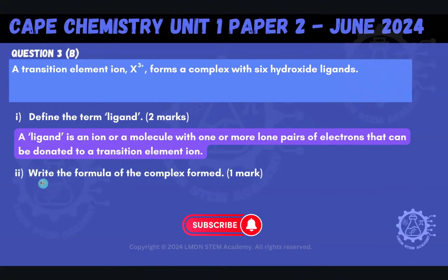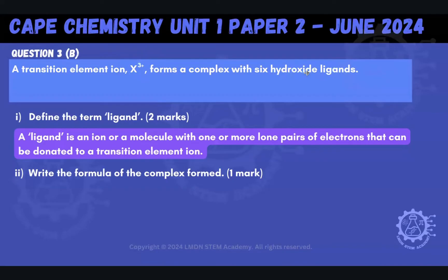Next, we're being asked to write the formula of the complex formed. Here's our transition metal ion. In this particular instance, our ligand is the hydroxide ions — we have hydroxide ligands. There are six of them and we have our transition metal ion. We write the metal first, then we have our hydroxide ligand — six of them.